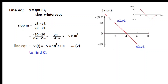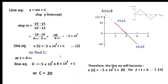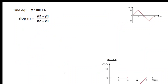The line intercepts the Y-axis somewhere, giving the value of C. Using the formula: we find where V(t) = 0. At t = 4ms, V(t) = 0. Substituting into the equation and solving, we find C = +20. Our final equation for the duration 2 to 6 milliseconds is therefore V(t) = -5×10³·t + 20.